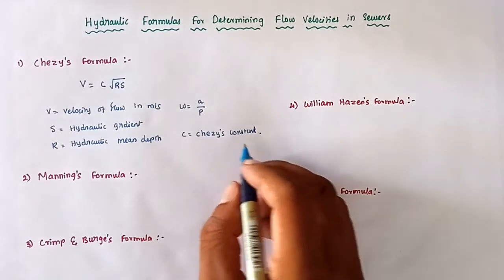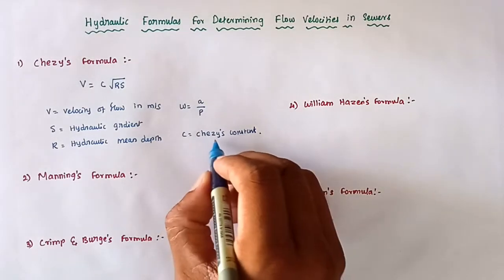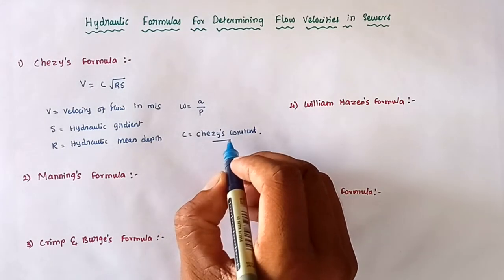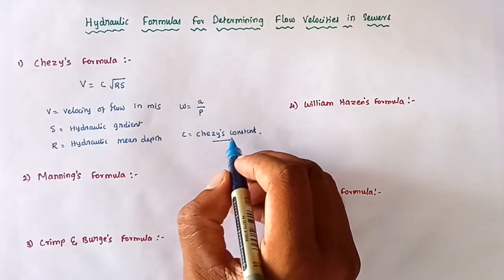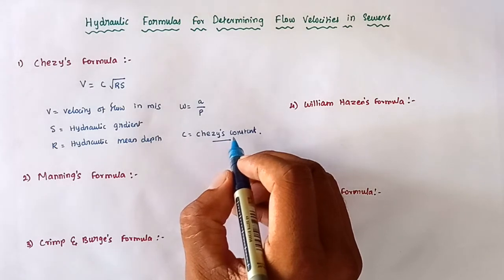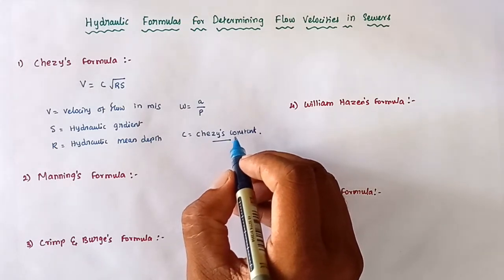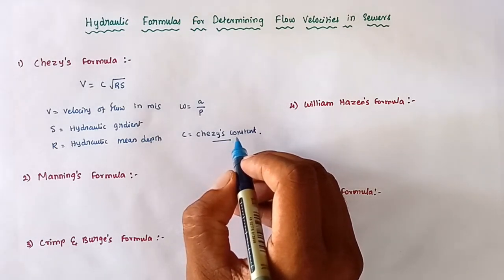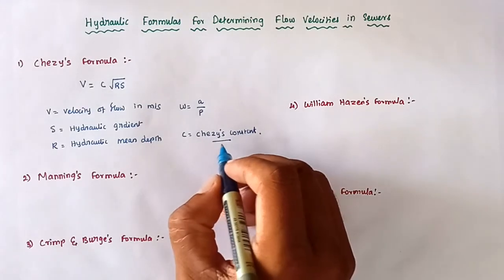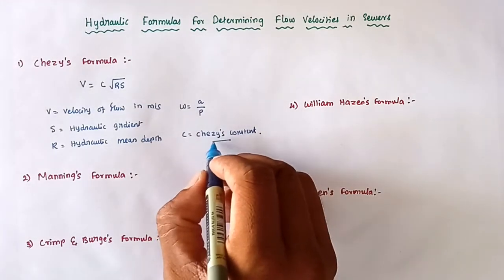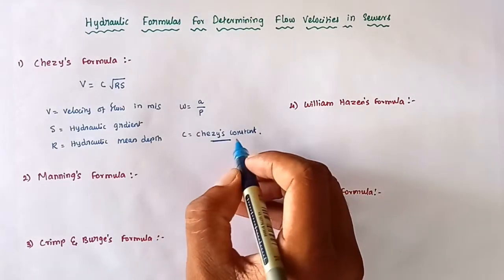Chezy's constant depends upon various factors such as the size and shape of the channel, the roughness of the channel surface, and the hydraulic characteristics of the channel. These are all the factors affecting Chezy's constant.